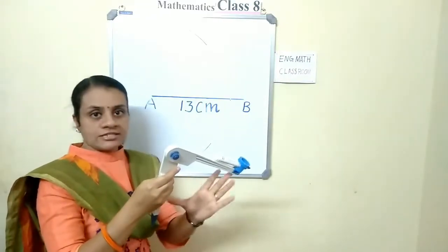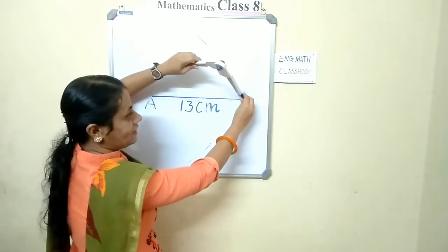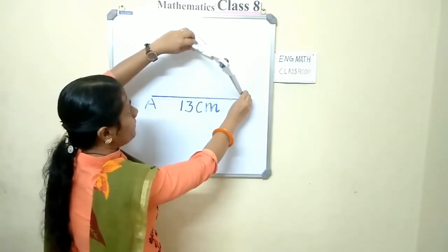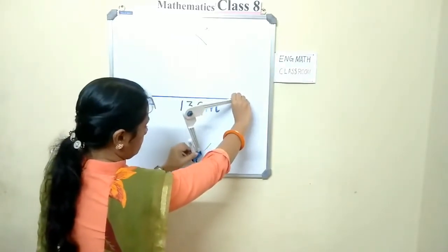Same way, the radius you have to take. Keeping B as the center, cut the previous arc upward and downward.